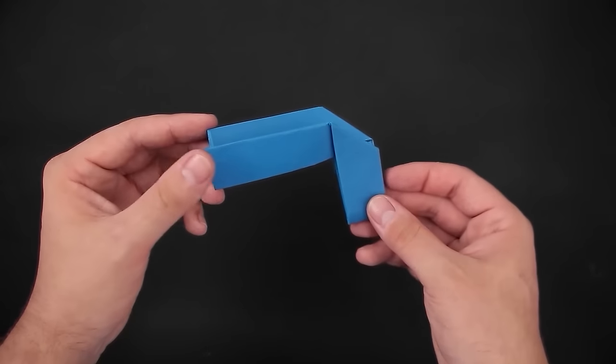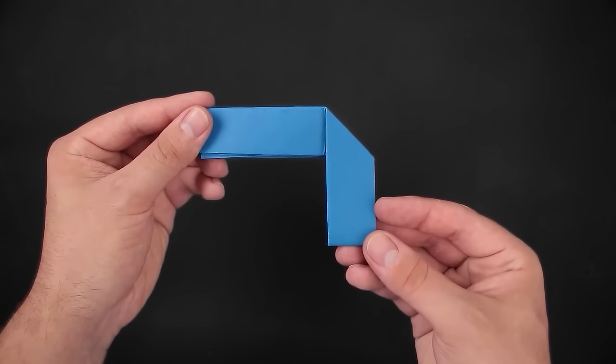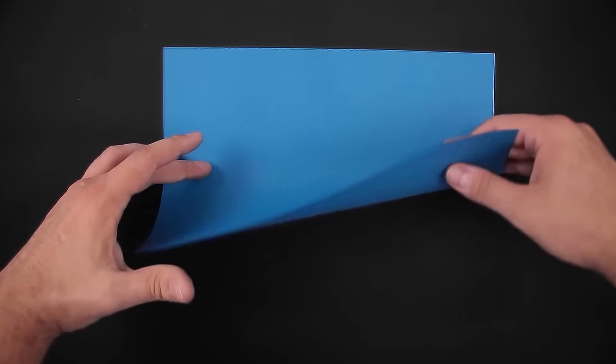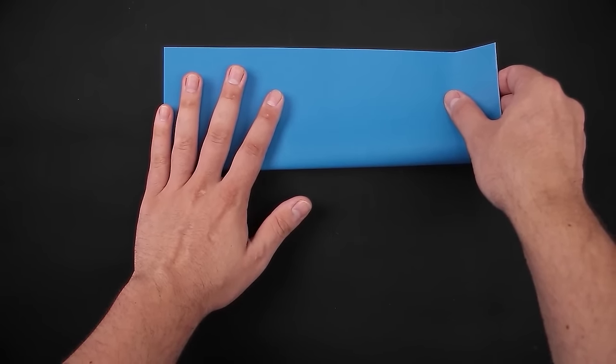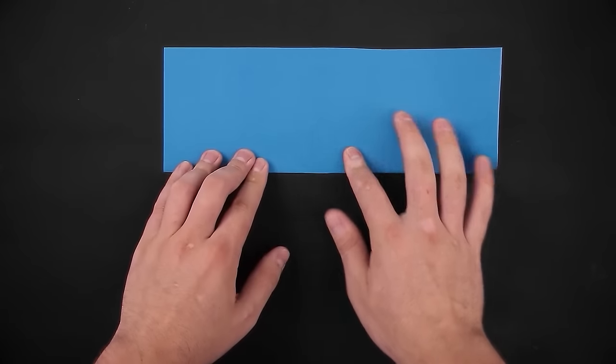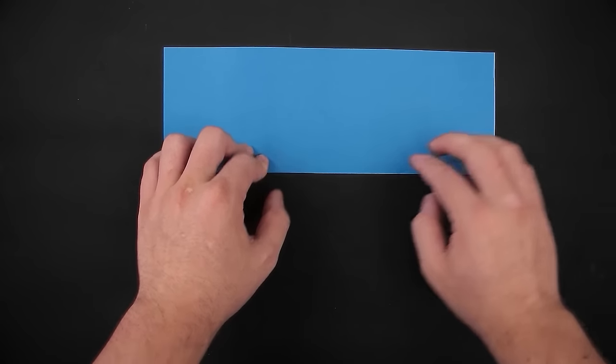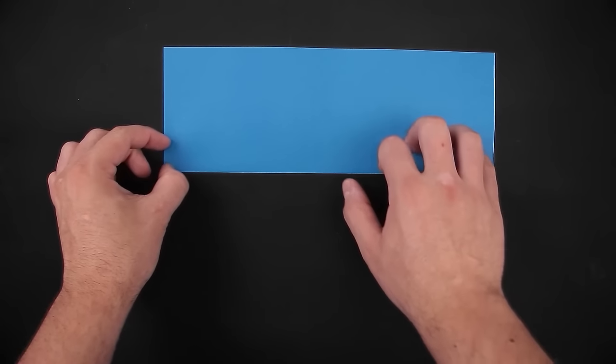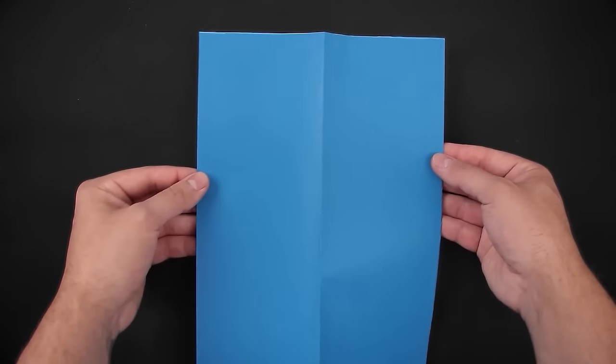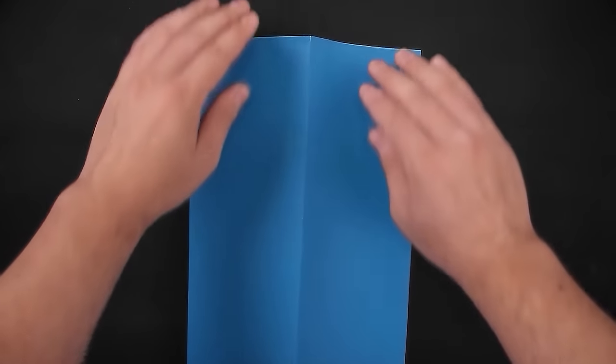And the first part is ready. To make the rest, we'll first have to cut the second sheet in half, so we can first fold just to make a mark.